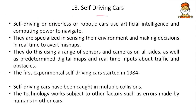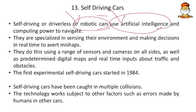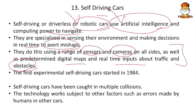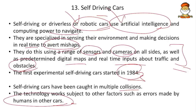Self-driving or driverless cars use artificial intelligence and robotics with computing power to navigate. They sense their own environment and make real-time decisions to avoid mishaps, using a range of sensors and cameras on all sides, along with predetermined digital maps and real-time traffic inputs. The first experimental self-driving car started in 1984. However, self-driving cars have been caught in multiple collisions, including from errors made by humans in other cars.